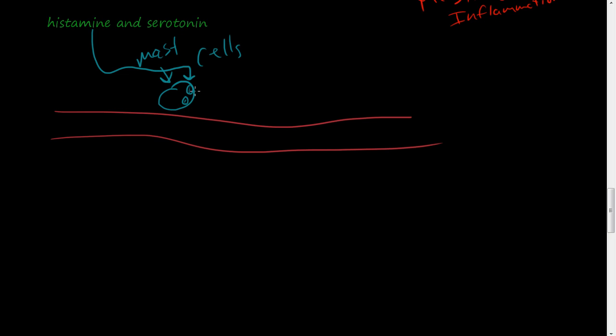Mast cells have these pockets, and there's histamine inside these pockets. Histamine is released by several factors, and I'm going to explain those factors in a minute. But as soon as those are released, there's an enzyme called histaminase.